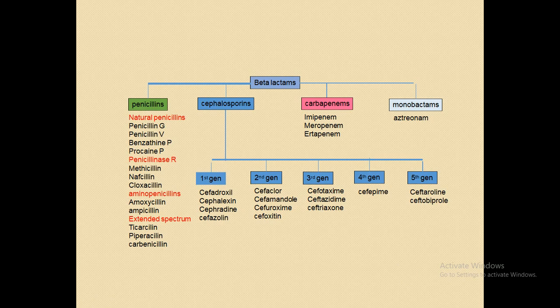Now, the basic classification of beta-lactam antibiotics is divided into many classes. The first is penicillins, then cephalosporins, then carbapenems, and monobactams. Penicillins include natural penicillins — that is, penicillin G, penicillin V, and benzathine penicillin. Penicillin V is available orally, while penicillin G can be administered to patients in the form of injections.